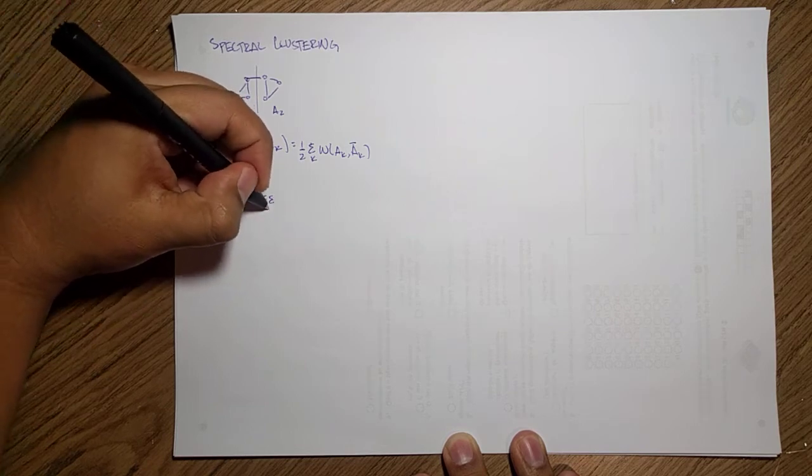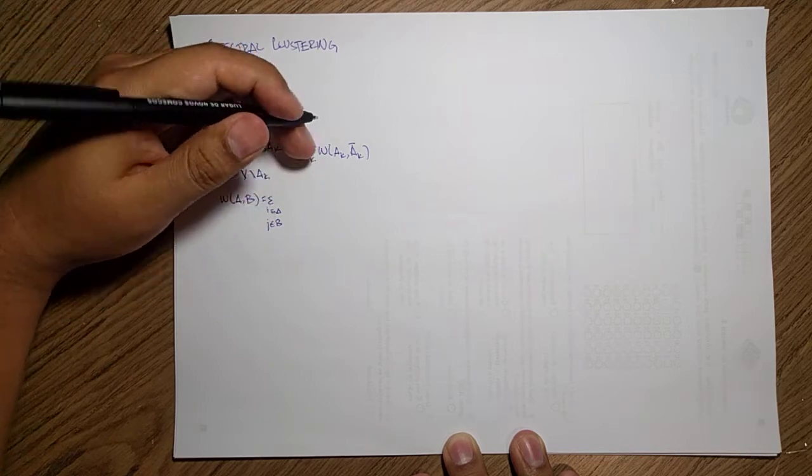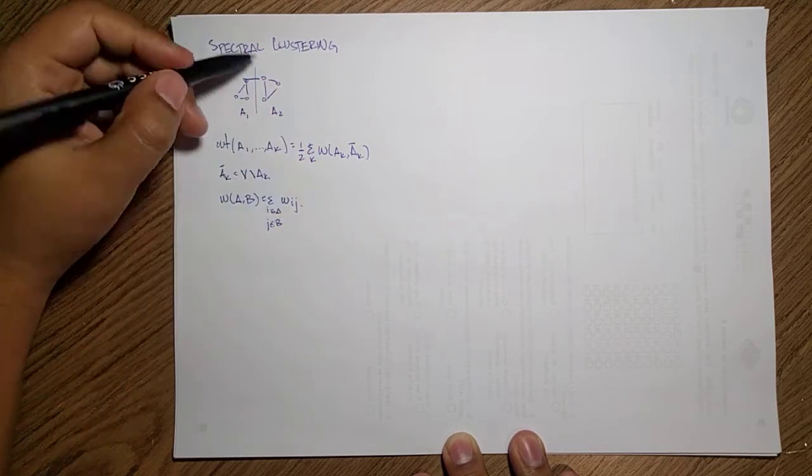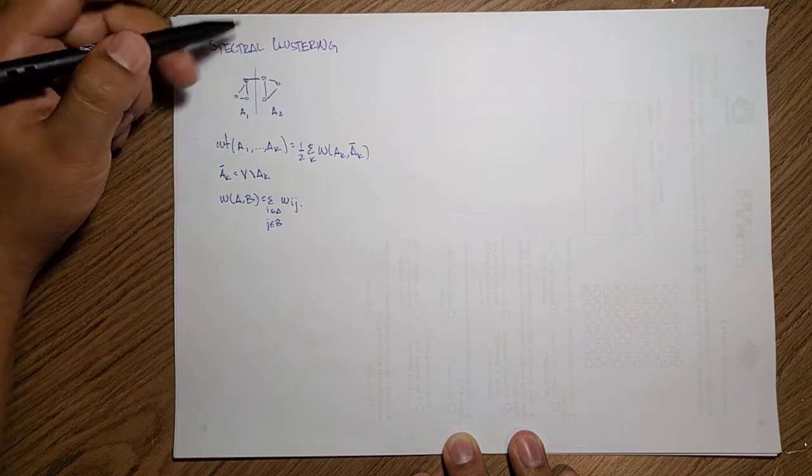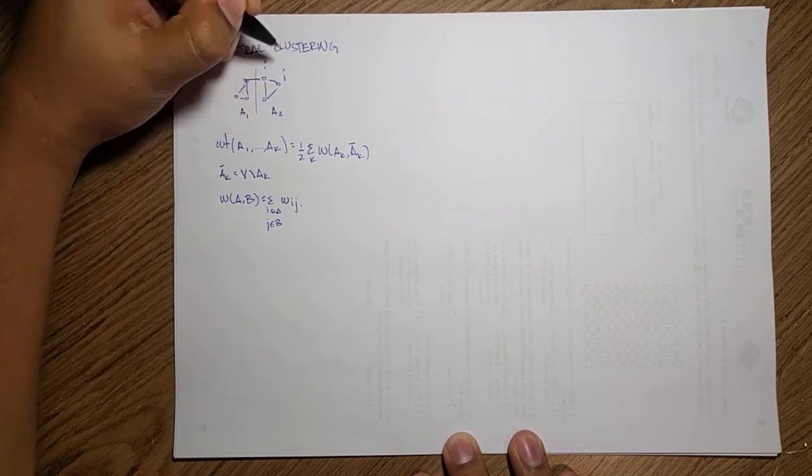This W between two sets here is just the sum of all the i's in A and all the j's in B, and then we're going to sum the weights wij. So if I take this graph over here, this is node i, this is node j, this edge over here has a wij weight.